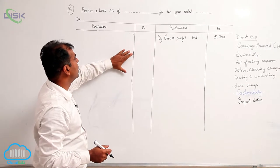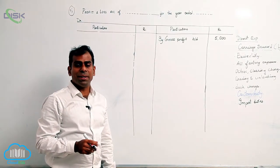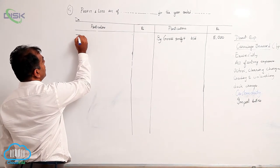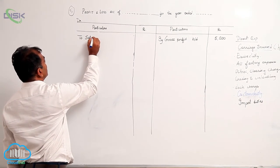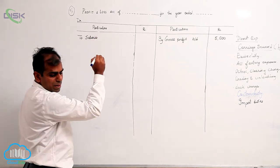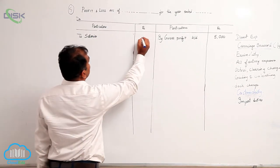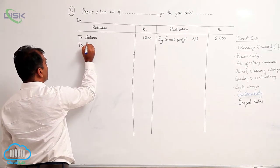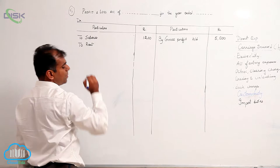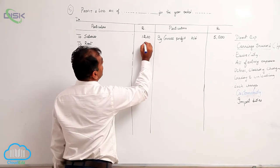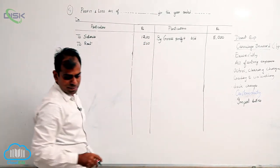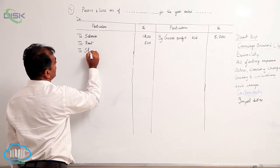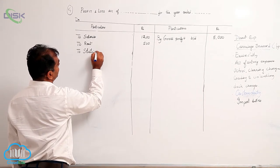Salaries is an expense, so salaries go on the debit side, amount being twelve hundred. The next item is rent — again on the debit side because it is an expense — amount being five hundred.